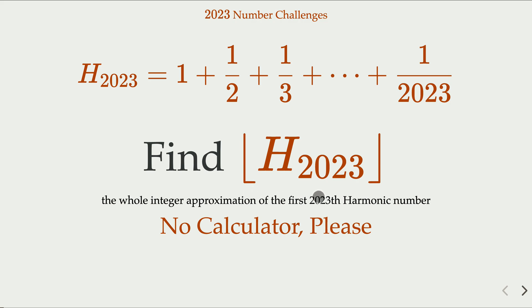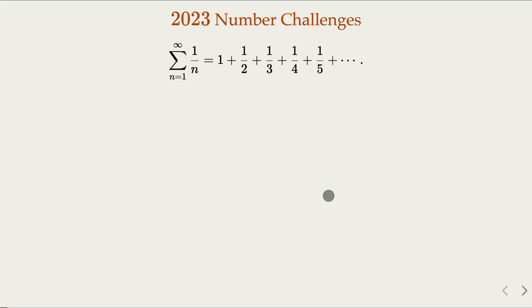Of course, we do not want to use a calculator. With that, we will recall the basic property of this. The sum of all the natural numbers 1 over n, n being all the natural numbers. Back in 1400, people figured out with the famous proof that it diverges.